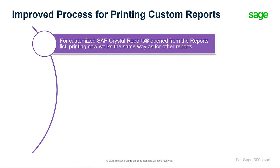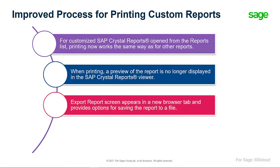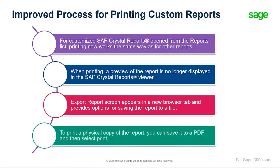The new printing process for web screens that was released with the Sage 300 2021 version is now extended to custom Crystal Reports. You will now have improved overall performance while printing custom reports. When printing a report, a preview will no longer be displayed in the Crystal Reports viewer. Instead, the Export Report screen appears in a new browser tab and provides options for saving the report to a file. To print a physical copy of the report, you can save it to a PDF and then print to your printer from the PDF.